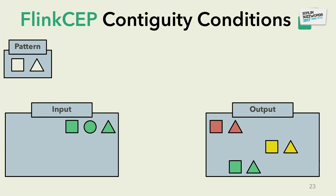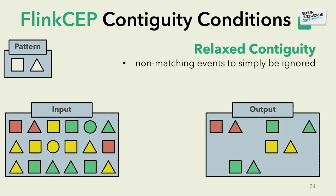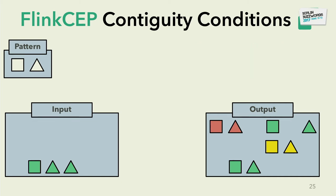In some cases you want to reject the circle without rejecting the partial match of the rectangle. This is termed relaxed continuity in Flink CEP — you simply reject the circle and accept the rest of the events. There is a third type called non-deterministic relaxed continuity. Consider the highlighted pattern where you have a rectangle followed by two triangles. With relaxed continuity, the output is only the match containing the rectangle and the first triangle.